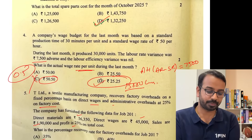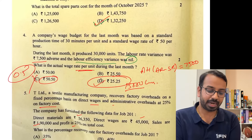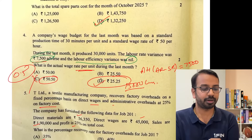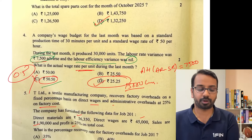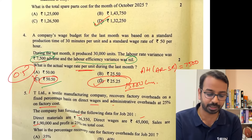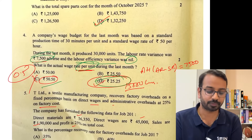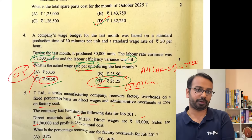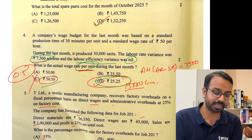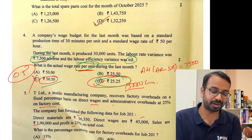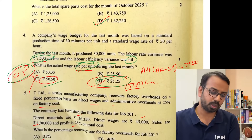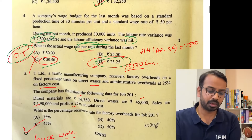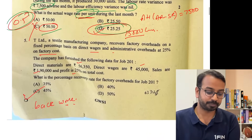When you calculate the variance, the rate you get is 50.5, but here they have said per unit, so the answer should be 25.25. You can also do this as 7500 divided by 15,000 to get 0.5 and work accordingly, or 75 divided by 30,000 — both approaches are possible.